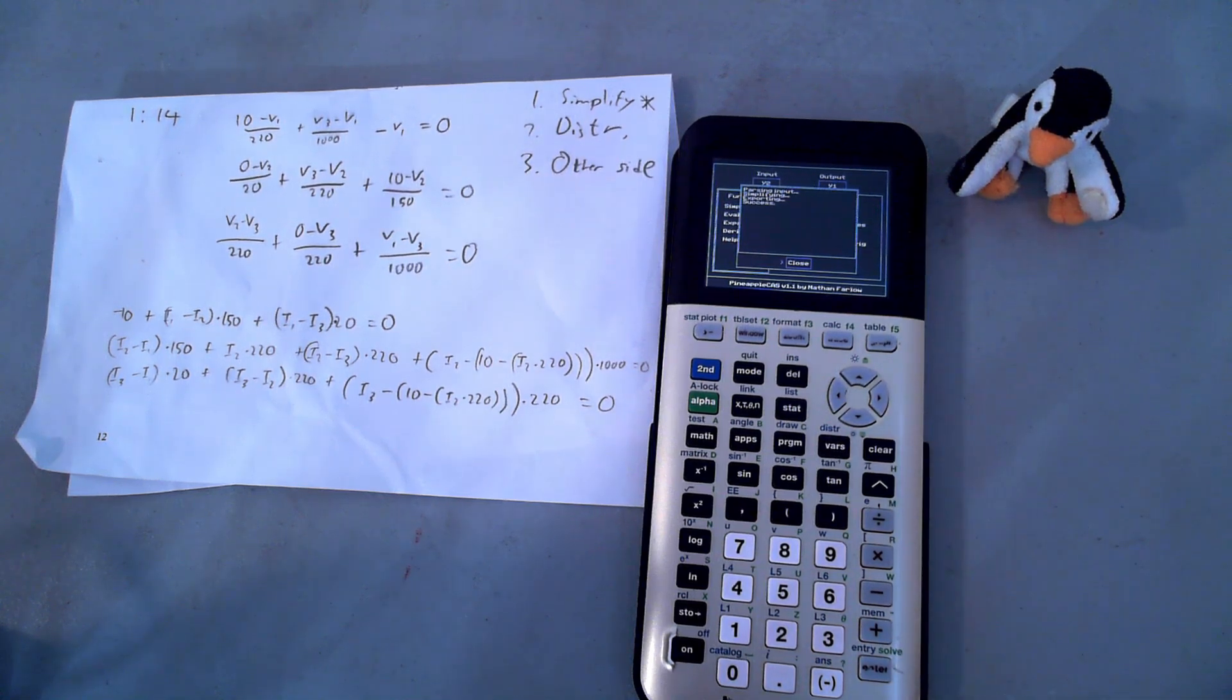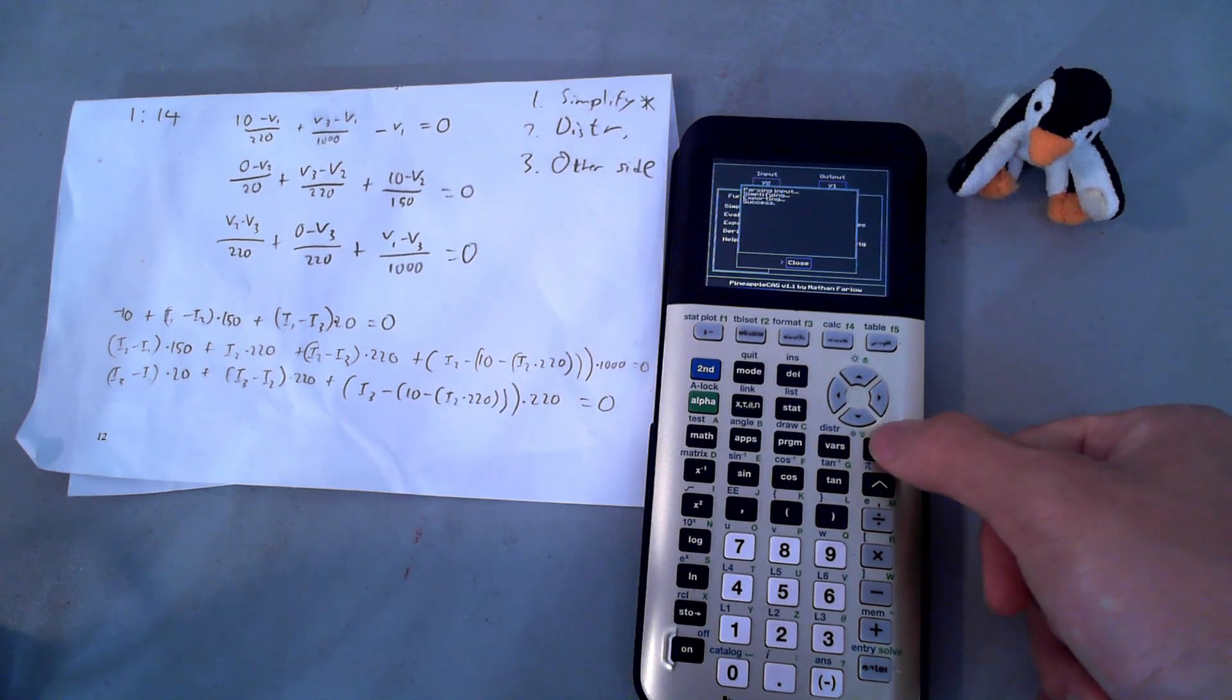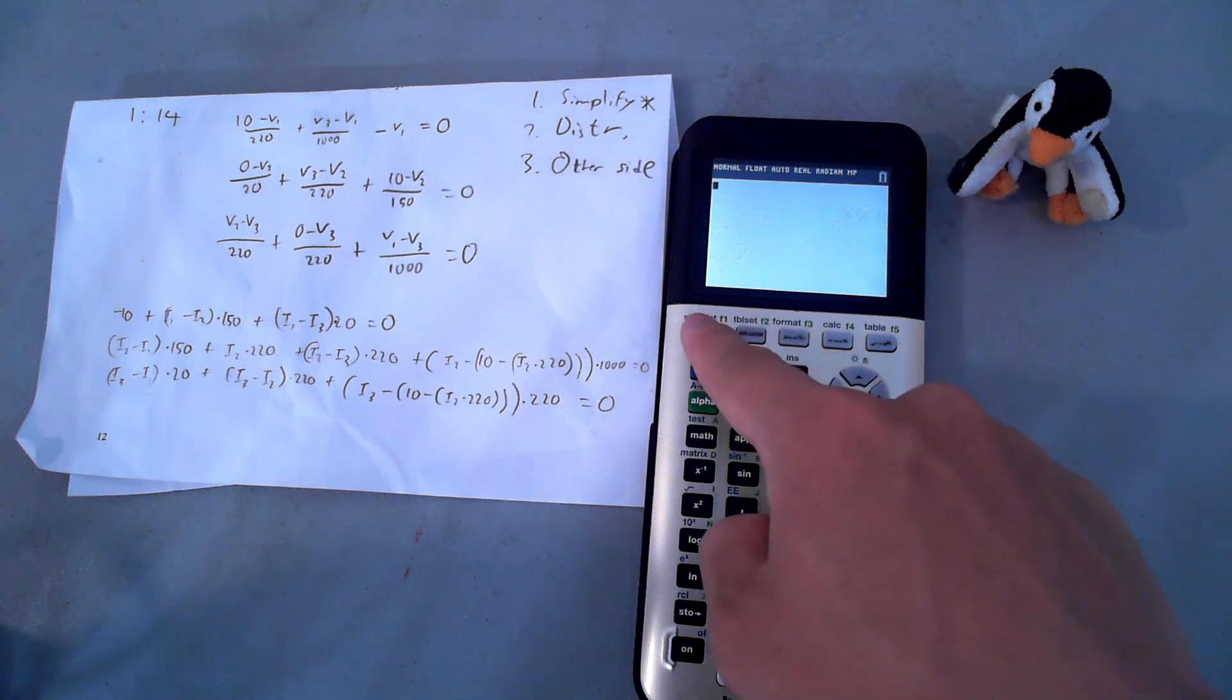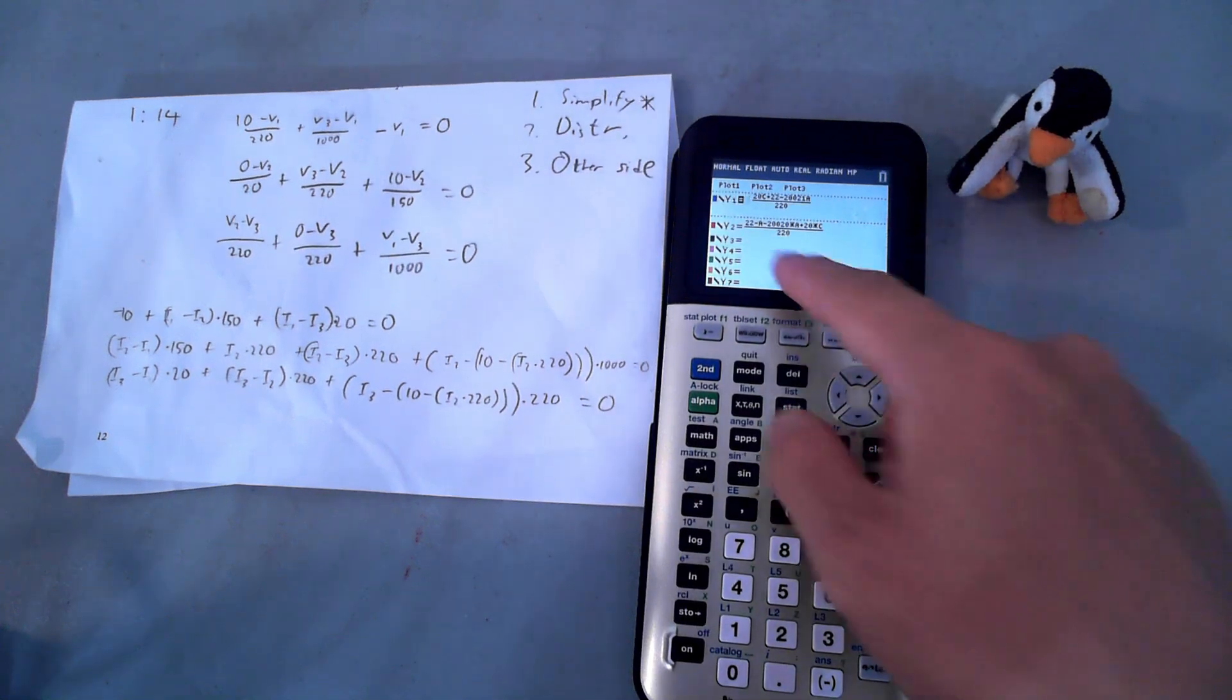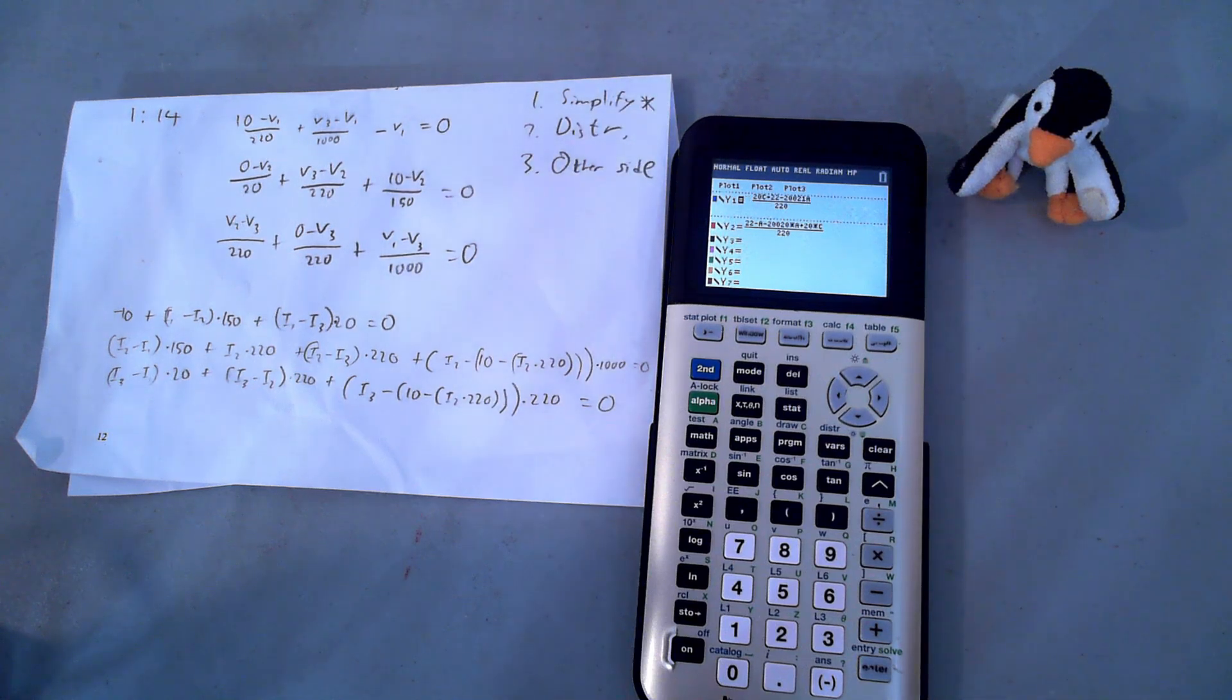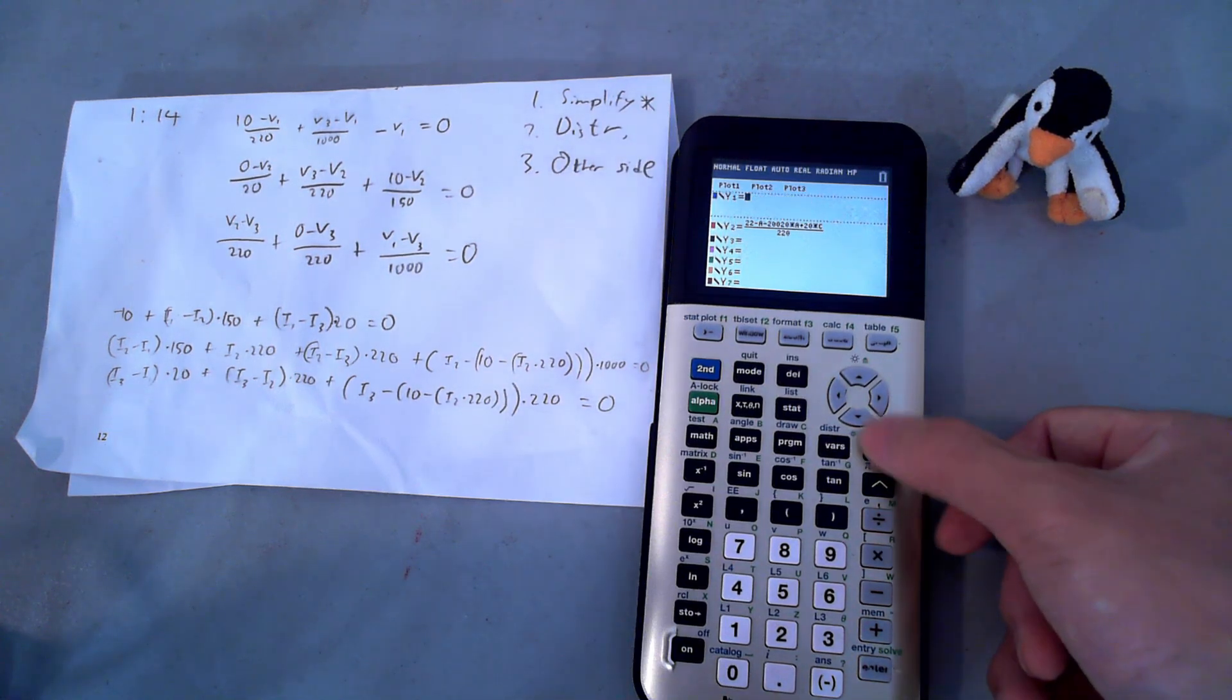And as you can see, it finally says success. To exit, we press clear two times and it exits. And now what we're going to do is we're going to go and hit Y equals and you can see that it's basically simplified the entire thing and left it in nearly standard form right off the bat. So that worked beautifully.